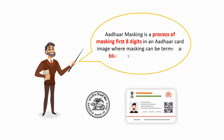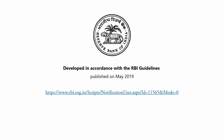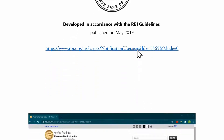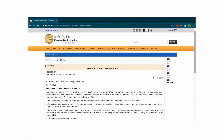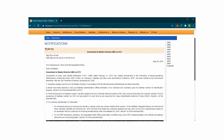Aadhaar Masking is a process of masking the first eight digits in an Aadhaar card image, where masking can be termed as blurring out or blacking out. This product is developed in accordance with guidelines published by the Reserve Bank of India in May 2019.